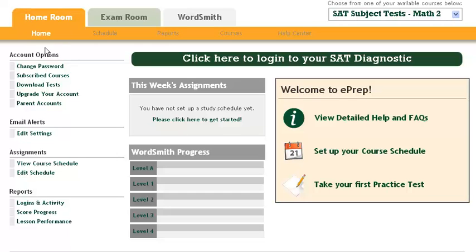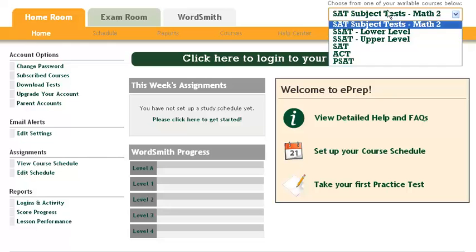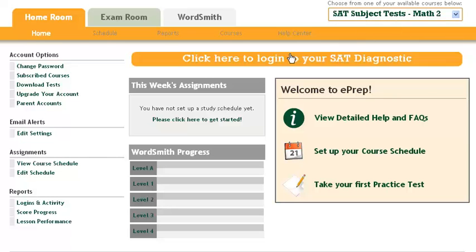Basically it starts with the homeroom. On the left you have the account options and you can look at our college test prep video that explains how all this works. Up at the upper right, if you have more than one course, this is where you select your course. So we're going to go ahead and select the math course and then go to the exam room.